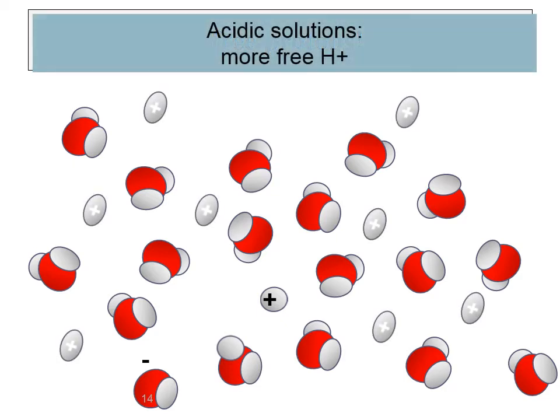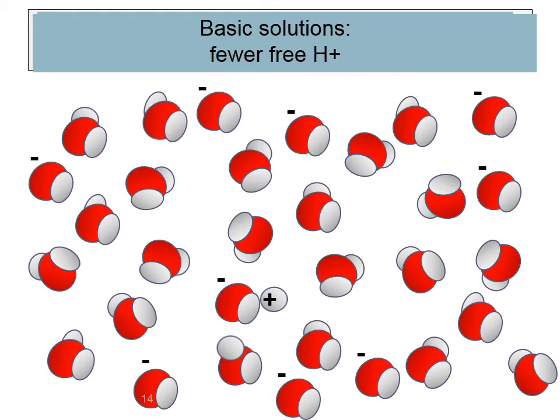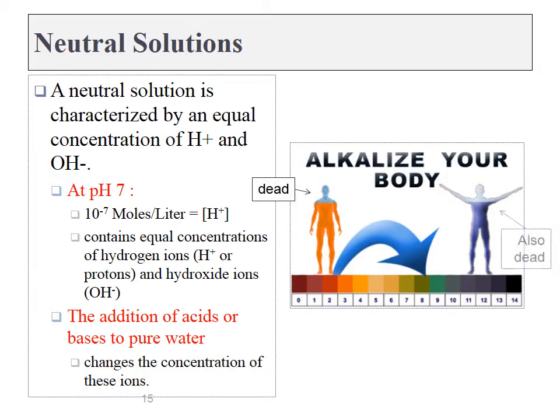If I were to add more H pluses, this would be an acidic solution. There would be more H pluses than OH minuses. Conversely, if I had fewer H pluses, the solution would be alkaline. The pH would be higher than 7. So at pH 7, there's 10 to the minus 7 moles per liter of free H plus ions. To make something more acidic or more basic, we have more H plus or fewer H plus. Anything lower than pH 7 would be acidic. Anything higher than pH 7 would be alkaline.